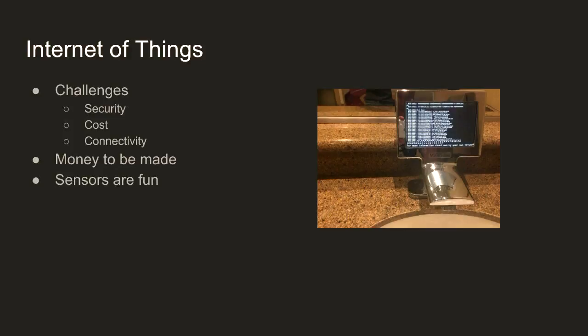So, Internet of Things - yeah, it's going to fix all our problems. This photo is from one of my favorite Twitter accounts, Internet of Shit - it shows a stack trace from a little embedded Linux device on a tap. There are lots of challenges with IoT: security - we don't want our LED lights joining botnets; cost - you need to drive prices down but also make something useful; and connectivity - there's an interesting Adelaide startup planning to launch micro-satellites for IoT connectivity, plus cellular, Wi-Fi, and various other radios. There's money to be made, and sensors are fun.